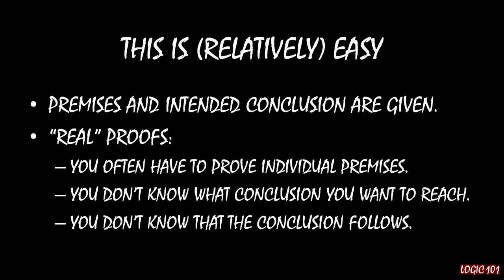The reason that this is so easy in comparison is that when we're doing these sorts of proofs in this course, you're going to have the premises and intended conclusion as a given — I'm going to give you what we're trying to conclude. When you're out doing proofs in the real world on your own, you often have to prove the individual premises. You might not know that P implies Q, so you might be spending a very long time showing that P implies Q even though you don't really care so much about it, but you need it in order to complete a larger proof. Also, you don't always know what conclusion you want to reach.